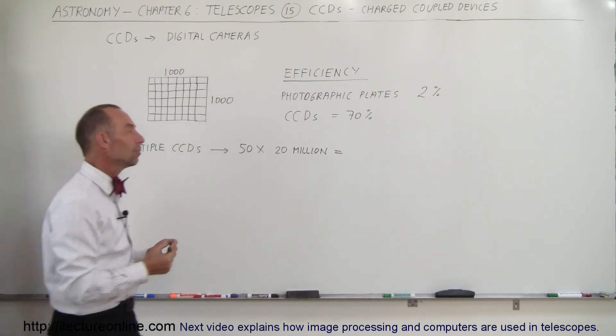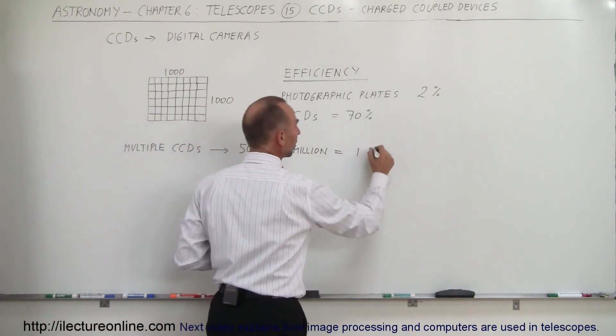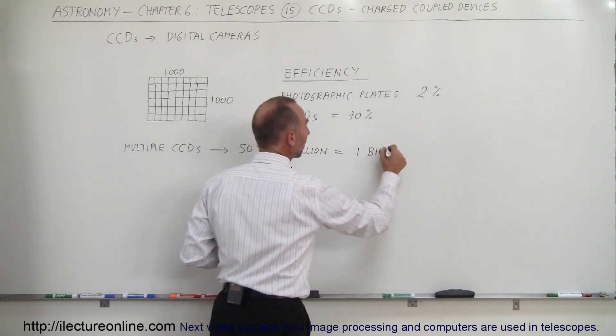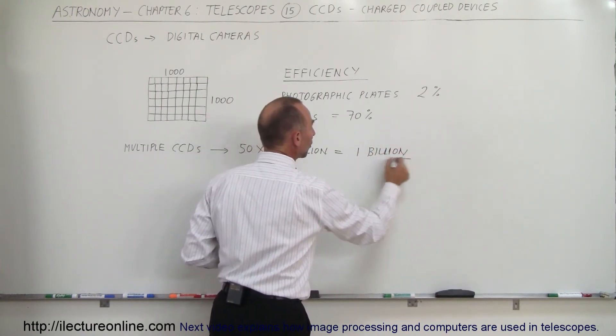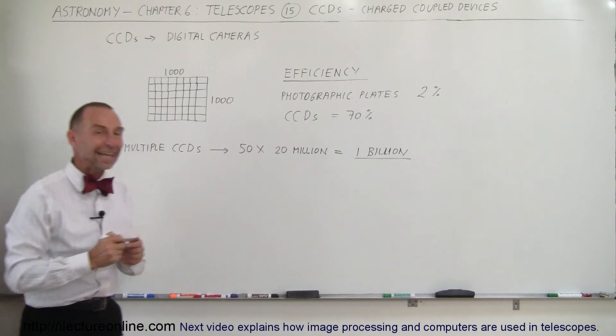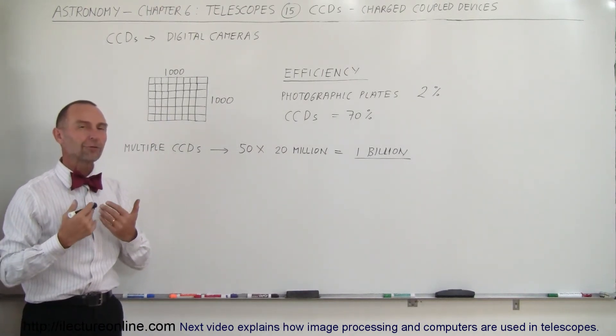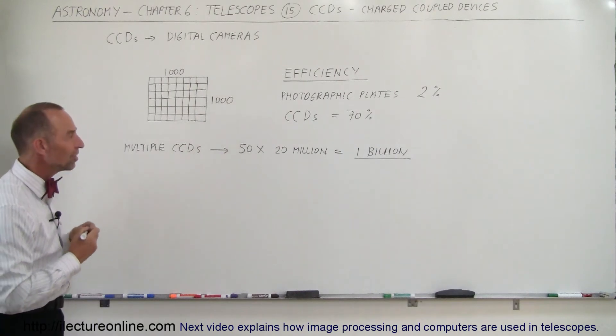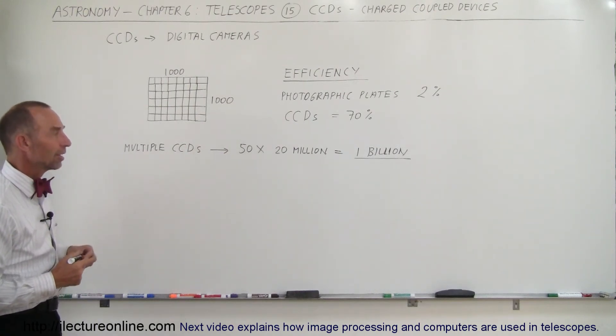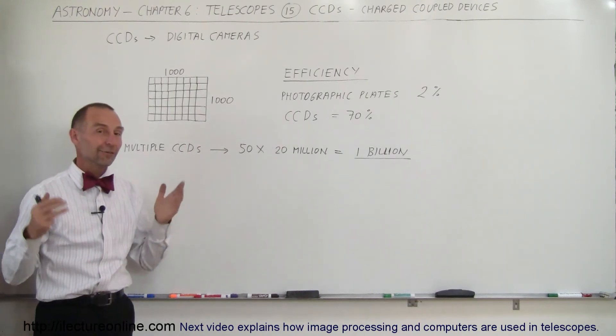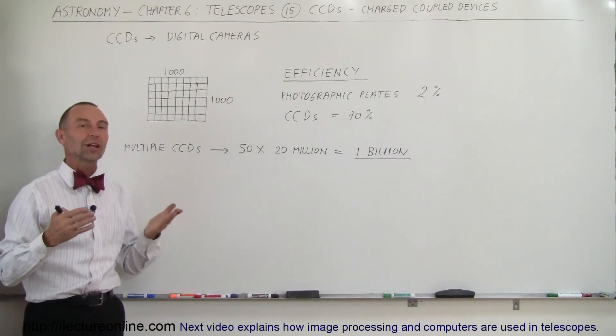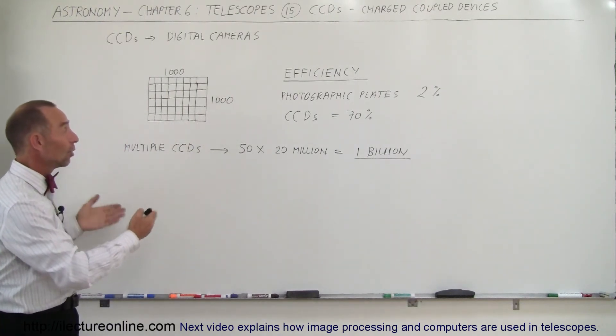You could collect as much as 1 billion pixels, and in some cases we have telescopes that will collect well in excess of 1 billion pixels on the photograph, allowing for enormous clarity and detail on the photographic pictures they take. CCDs in a very short time have absolutely revolutionized the ability for us to take pictures with telescopes.